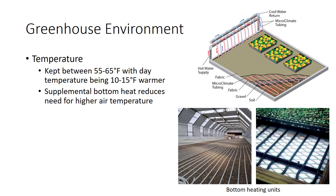To promote maximum crop growth and development, an optimal greenhouse environment must be maintained. Environmental factors that must be carefully controlled are temperature, light — including light quality, intensity, and duration — air, humidity, and water.